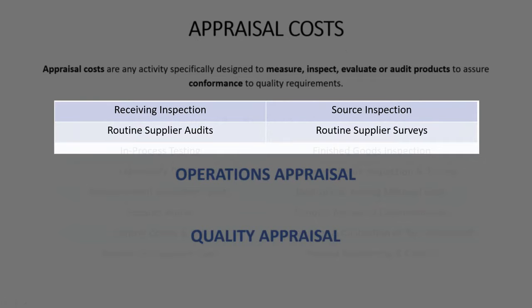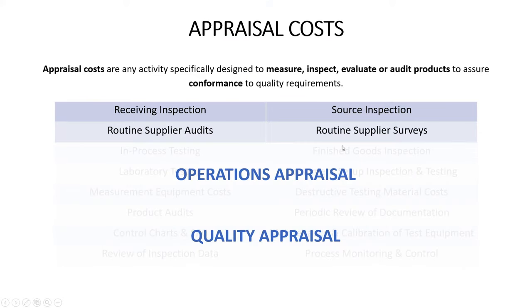On the supplier management side, appraisal involves things like receiving inspection, source inspection, supplier audits, and supplier surveys. Essentially, we're checking and verifying that either the product is conforming or the vendor is following their quality management system.